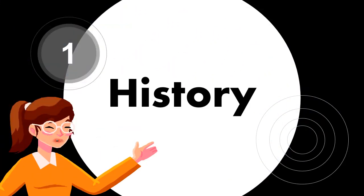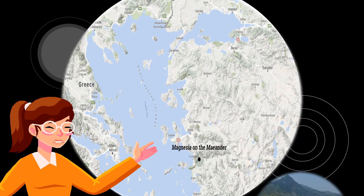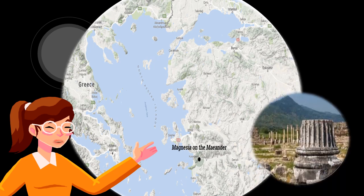For thousands of years, mankind have been knowledgeable of magnets and magnetism. Ancient people were intrigued by the magnetic rocks that were discovered in Magnesia, which is today a region of western Turkey.